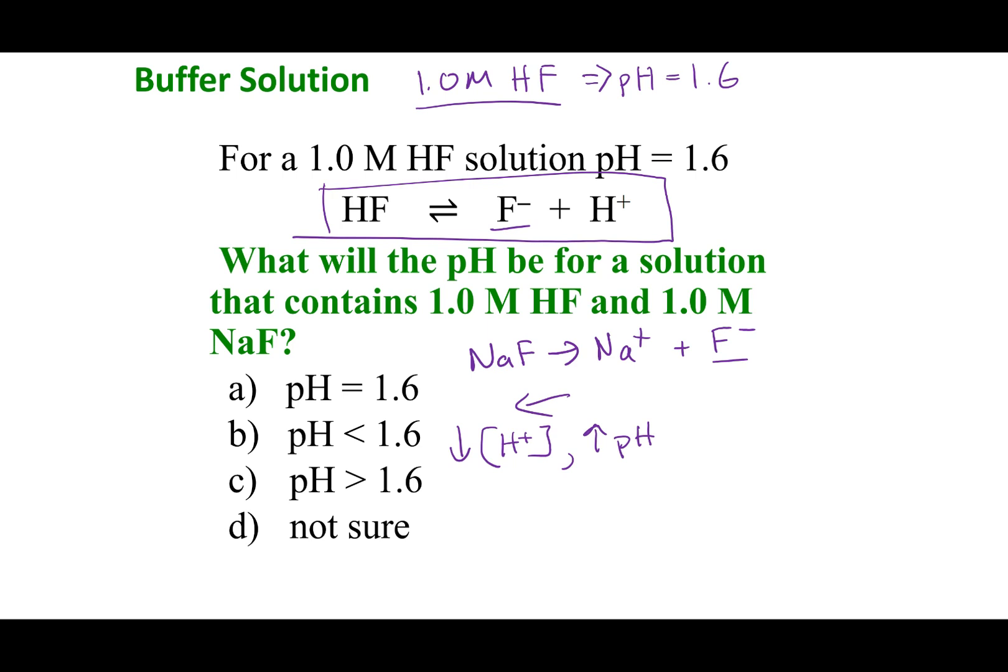Let's verify this by doing our ICE table. We're going to start just like we did in the last whiteboard. I'm going to write this reaction: HF breaks up into H+ plus F-. I'm going to write down I, C, E for my ICE table. And let's fill in values. HF, I know I put 1.0 molar of HF into the solution. For H+, I didn't add any H+. But here's where the difference comes in.